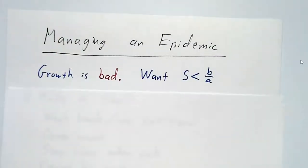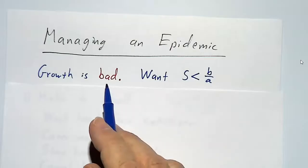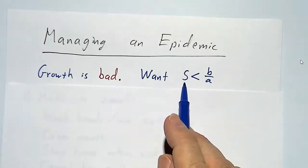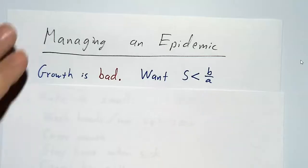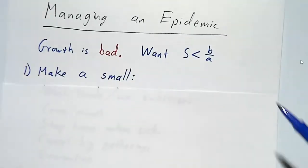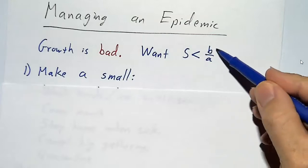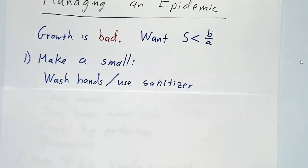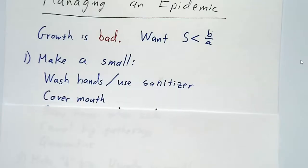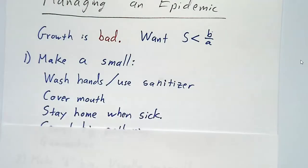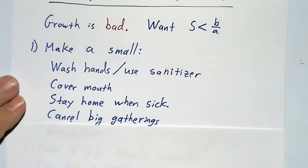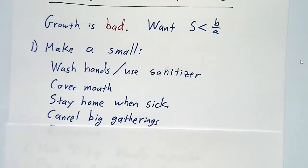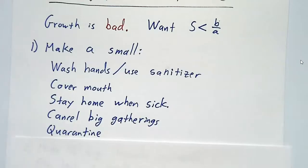If you're managing an epidemic, it's the opposite. In the epidemic, growth is bad, so we want to be below the threshold. You do that by making a small — making the threshold as big as possible by making the denominator small. Ways to do that: wash your hands, use hand sanitizer, that reduces transmission. Cover your mouth when you sneeze, stay home when you're sick. If you're in charge of things, maybe cancel big gatherings where a lot of people would get together and sneeze on each other. In extreme circumstances, you quarantine people.